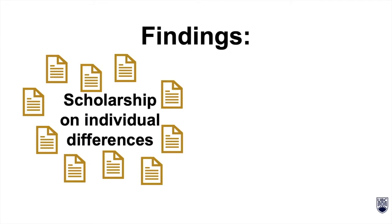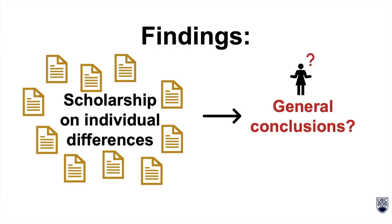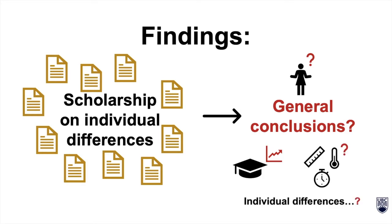The researchers found that while there's robust scholarship on individual differences, it's unclear if general conclusions can be made from this body of research. This is because most subjects were university-aged, the measuring instruments may not be reliable, and the definition of specific individual differences may vary.